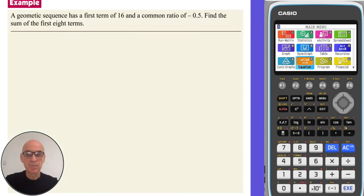In this question, we're given a geometric sequence, and we're asked to find the sum of the first eight terms. So if we start by writing down what we know, the first term is 16, so u1 is 16. The common ratio is negative 0.5, so r equals negative 0.5. And we have to find the sum of the first eight terms, so n will be 8.